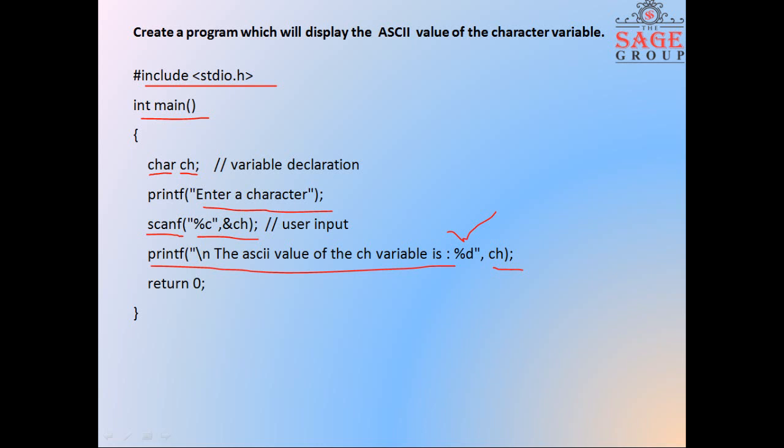Hope you can understand this. Here we have a variable ch of type character. We have a message displayed on screen. When you run this program, this message will be displayed on the screen. scanf ch - this is the way how you have to receive input from the user. After receiving the input in the form of character, this statement will print the ASCII value of the entered character.